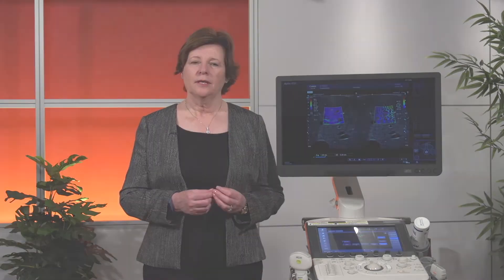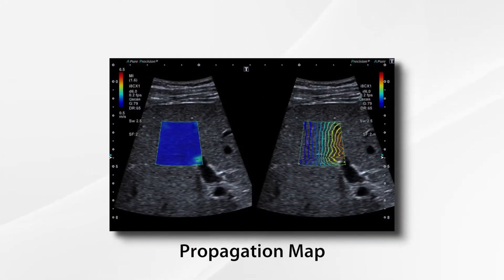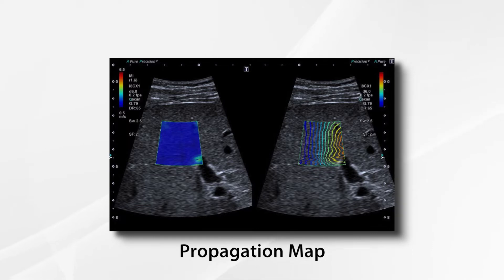So let's start with the propagation map. This region of interest looks like you could measure almost anywhere, but let me show you how the propagation map can add information on that for you. On the right you can see Canon's unique propagation map. This is automatically generated each time you perform a shear wave acquisition. The map presents the shear waves as wave fronts color coded by distance traveling across the region of interest.